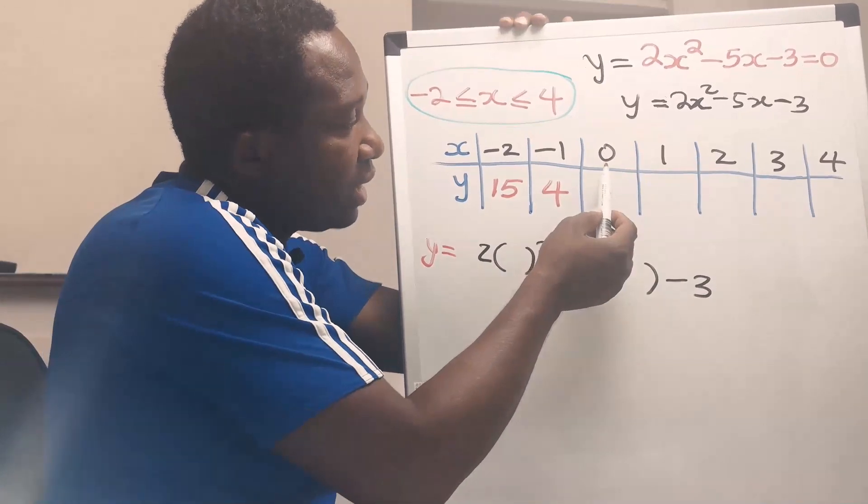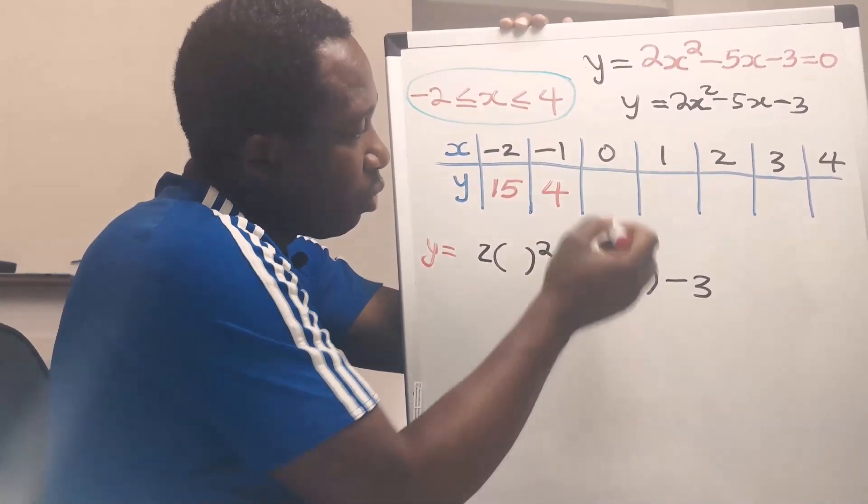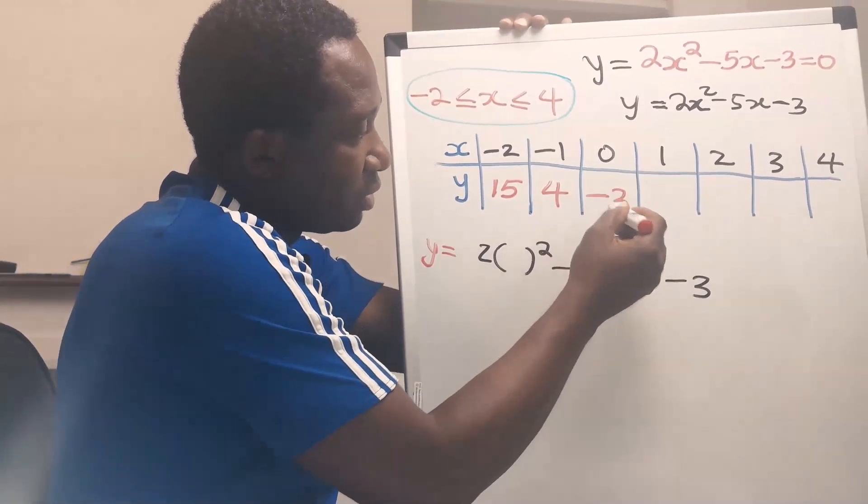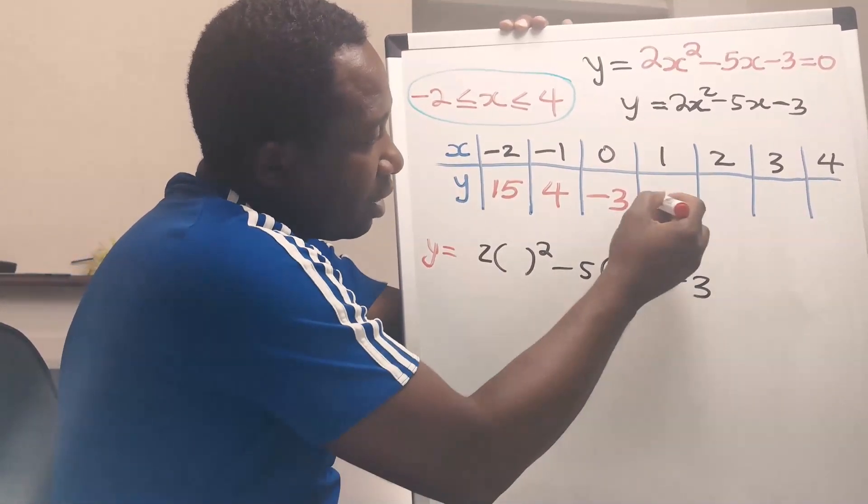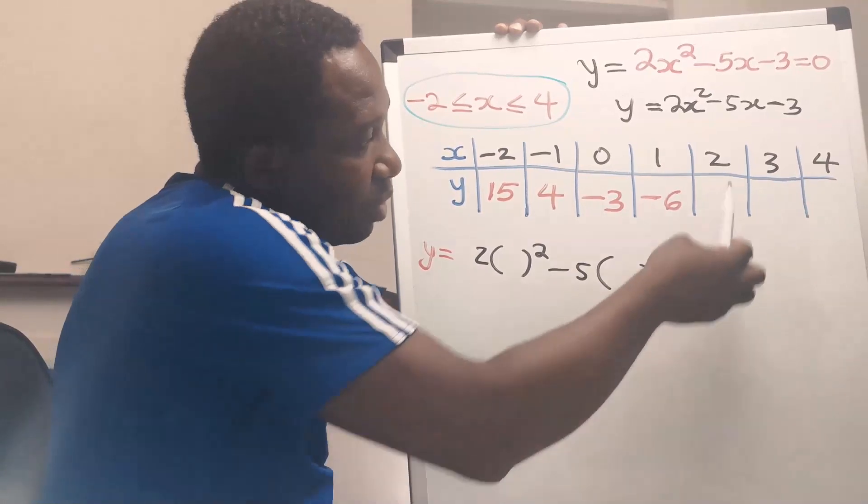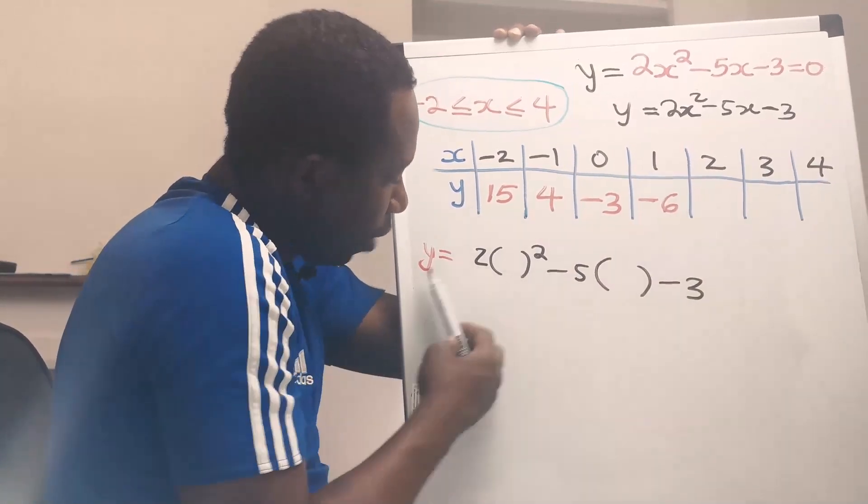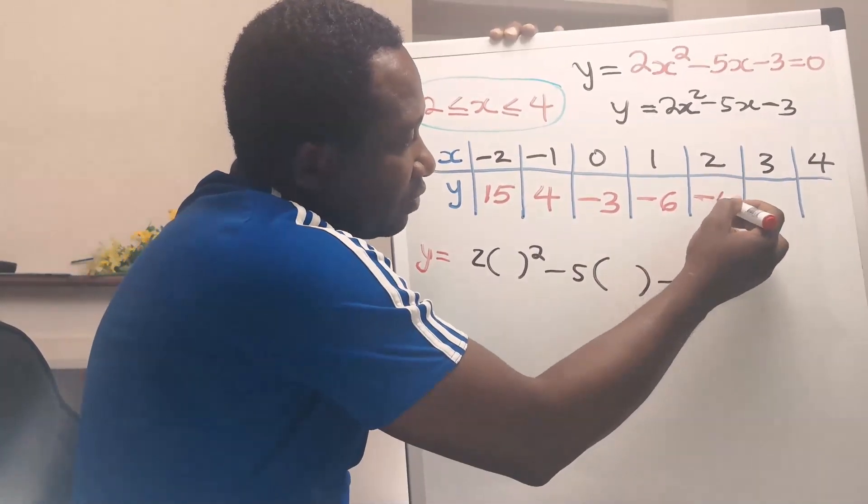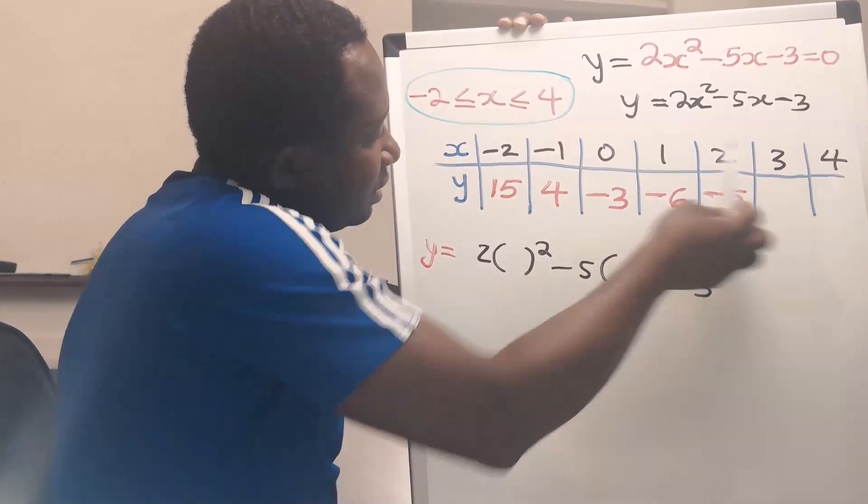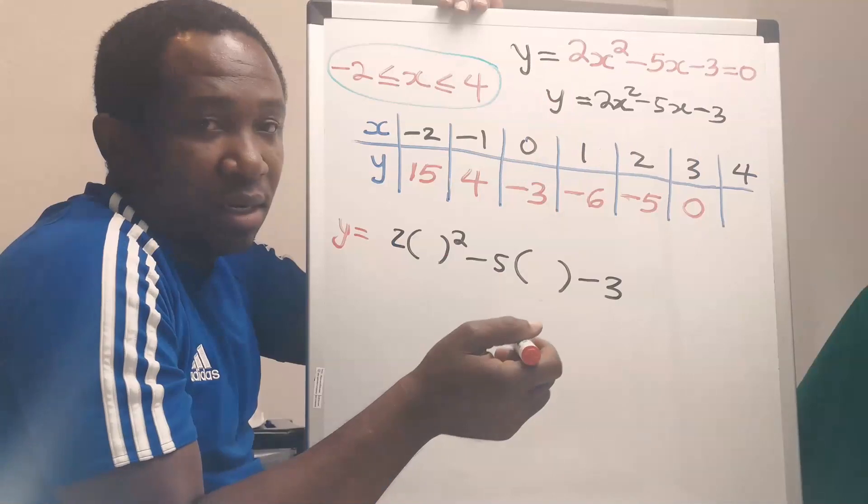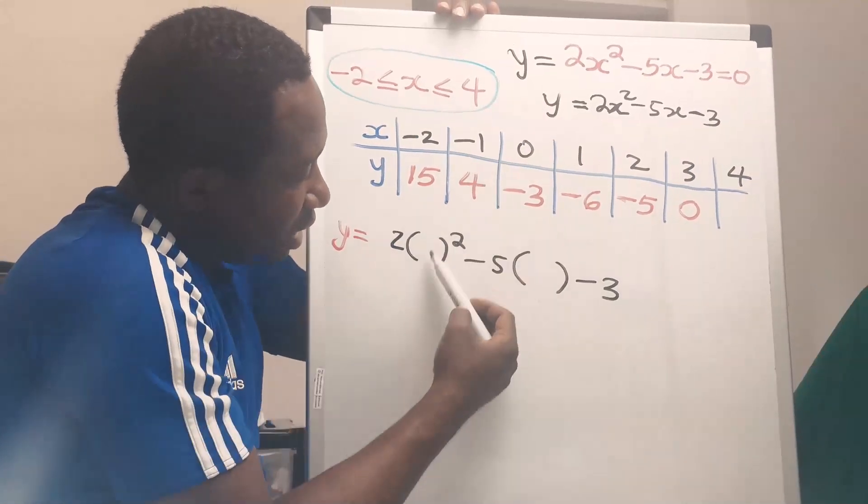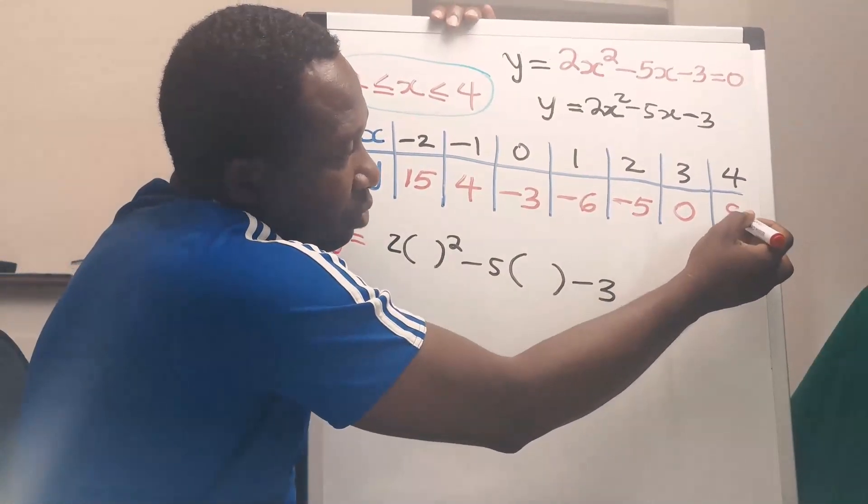When x is 0, y is minus 3. When x is 1, y is minus 6. When x is 2, y is minus 5. When x is 3, y is 0. When x is 4, y becomes 9.